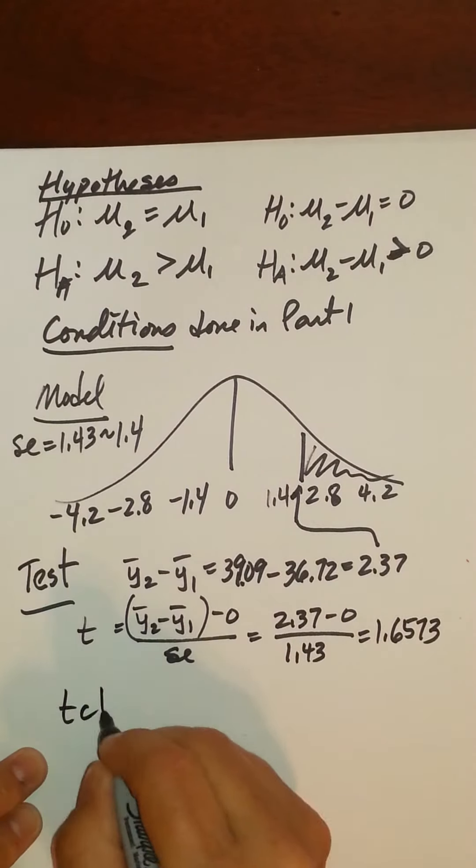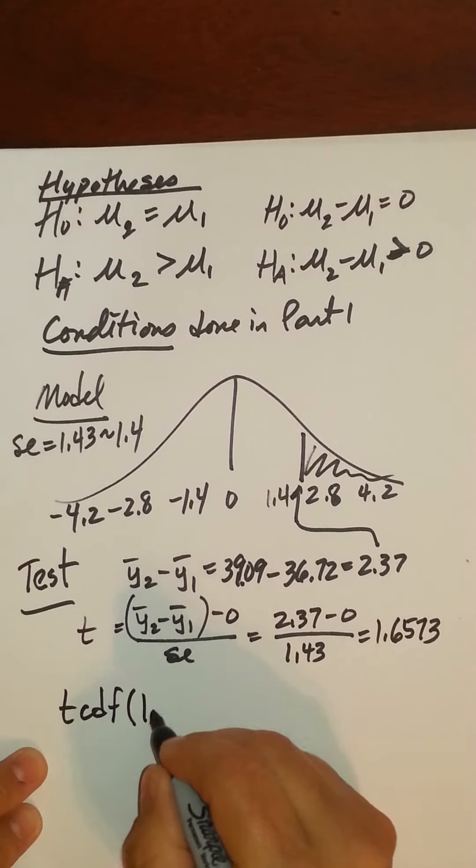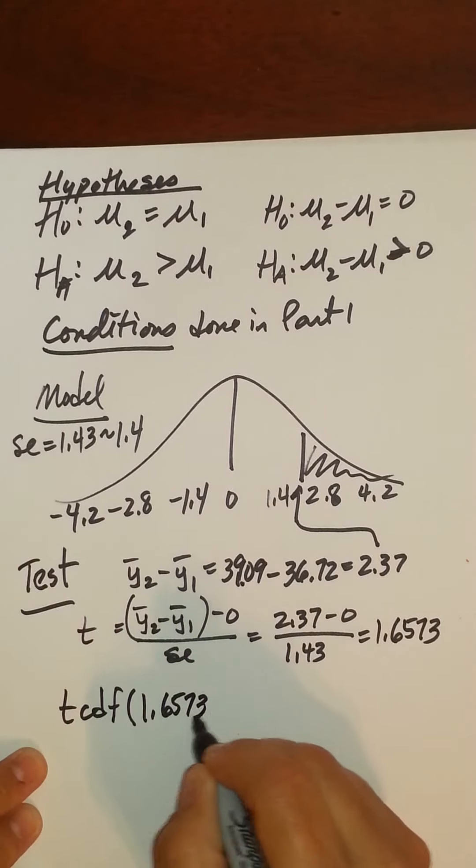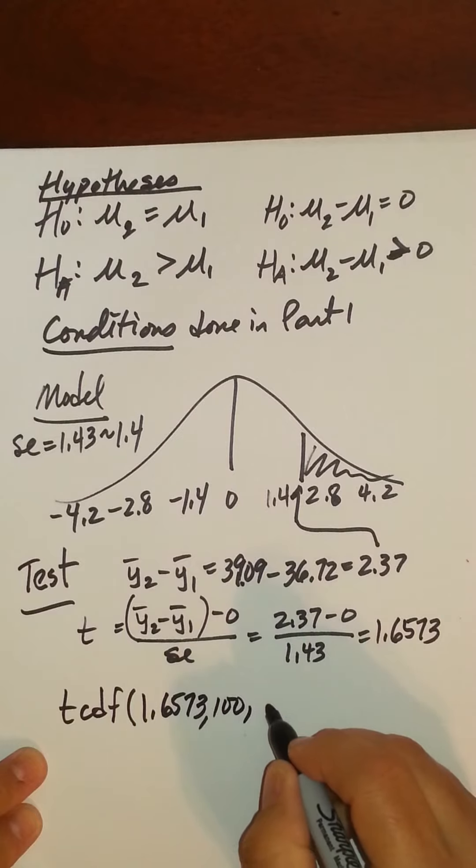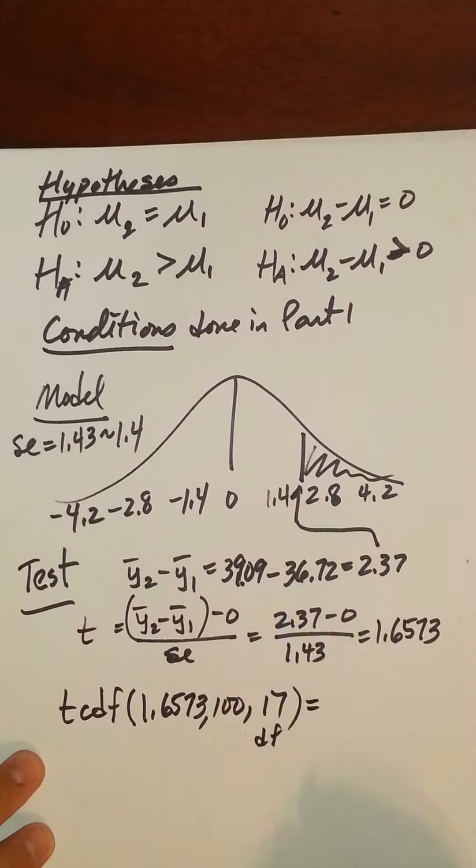So now run it through t-cdf, 1.6573 to 100. And remember, this is our degrees of freedom of the smaller sample size. I'm kind of simplifying this here. So now I get 0.058, which we could say is about 6%. That's our p-value.